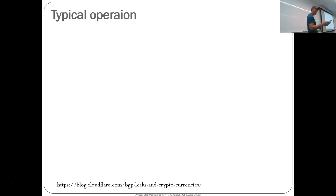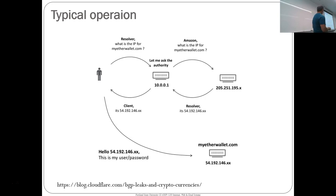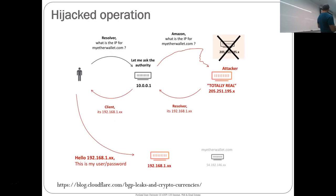Here's what DNS cache poisoning looks like in the typical operation: your machine has a resolver, asks the local DNS server, the local DNS server eventually gets to Amazon Route 53, which passes back the IP address, and you go to MyEtherWallet. What actually happened: you ask the resolver, the resolver asks the hierarchy, but because the BGP route was redirected, you go to the attacker's authoritative server, and the attacker passes you back something different.